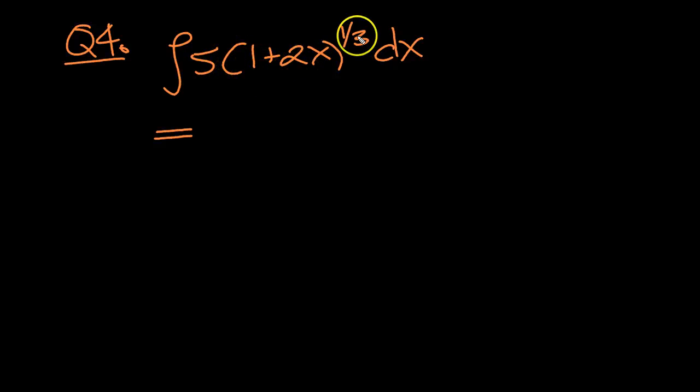OK, we've got the integral of 5 times something to the third. It's 1 plus 2x, so it's 5 lots of (1 plus 2x) to the one-third.